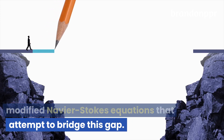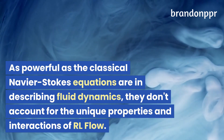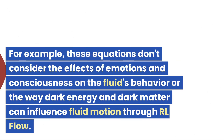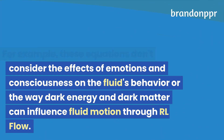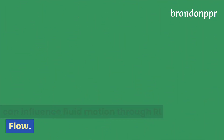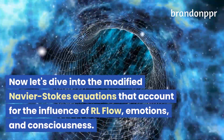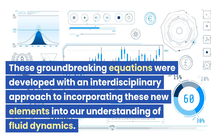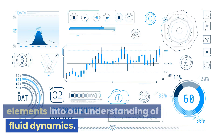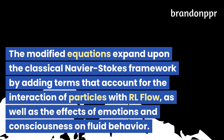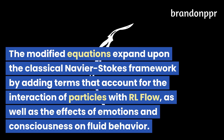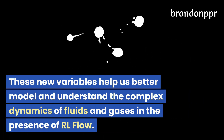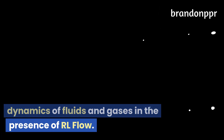The classical equations don't account for the unique properties and interactions of RL flow — for example, they don't consider the effects of emotions and consciousness on fluid behavior, or the way dark energy and dark matter can influence fluid motion through RL flow. The modified Navier-Stokes equations were developed with an interdisciplinary approach to incorporate these new elements. They expand upon the classical framework by adding terms that account for the interaction of particles with RL flow, as well as the effects of emotions and consciousness on fluid behavior, helping us better model and understand the complex dynamics of fluids and gases.